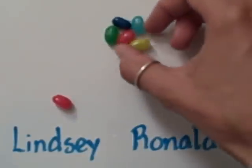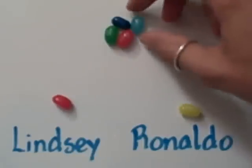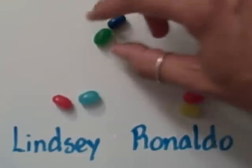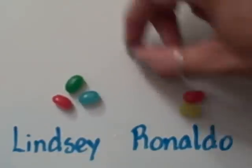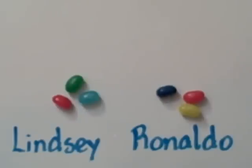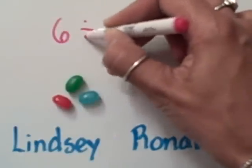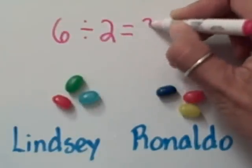Well, I can give one to Lindsey and one to Rinaldo. I can give another one to Lindsey and another one to Rinaldo. And I can give one more to Lindsey and one more to Rinaldo. I divided six jelly beans into two equal groups. How many jelly beans did each friend get? That's right, three. The number sentence we write to express this is six divided by two equals three.